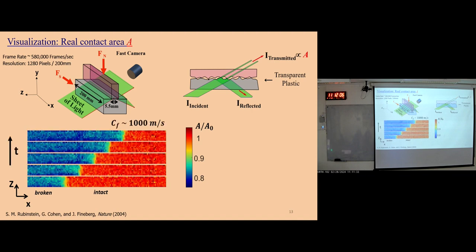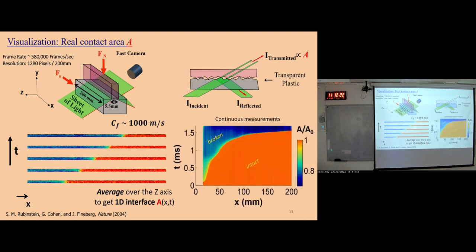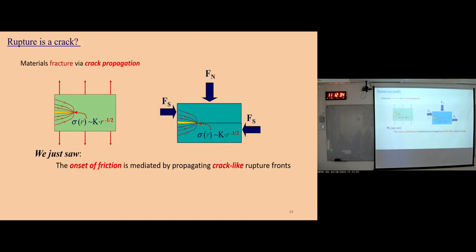Over time, this rupture front propagates at almost a thousand meters per second. After averaging over the z-axis to get a one-dimensional interface contact area, with continuous measurement we can show this is a typical rupture front propagation in the milliseconds range, with resolution of microseconds. It shows the onset of friction is mediated by a propagating crack-like rupture. The question is: are they really cracks?